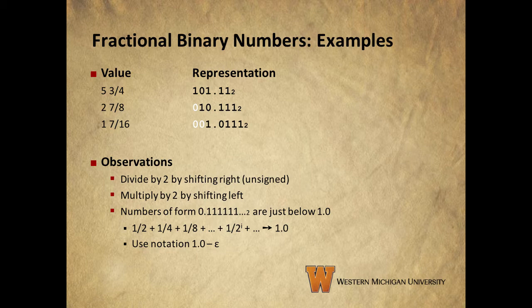Just like with integers, we can do an unsigned division by shifting right, and a multiplication by shifting left. Also remember that numbers of the form 0 dot, followed by a string of 1's approach, but do not reach 1. We use the 1.0 minus epsilon notation to indicate a number of that form.